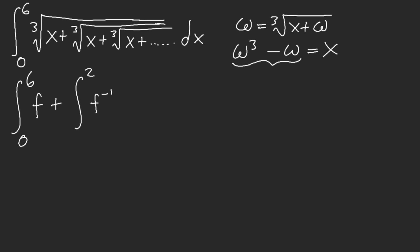But what about the lower bound? Plugging zero in — if we let x go to zero — there's an issue: W can equal 1, negative 1, or zero. Which one do we choose? This is where the nastiness comes in, so unfortunately we have nothing else but to investigate.